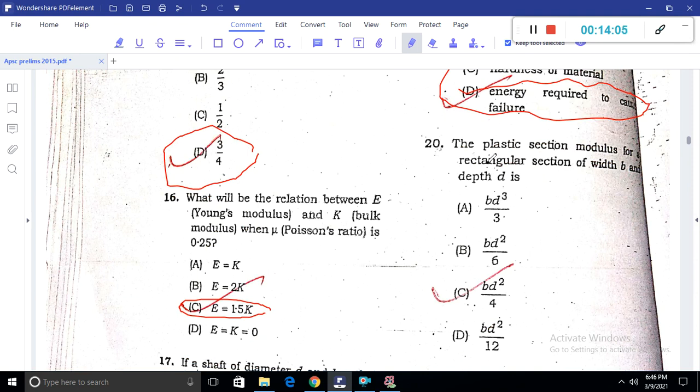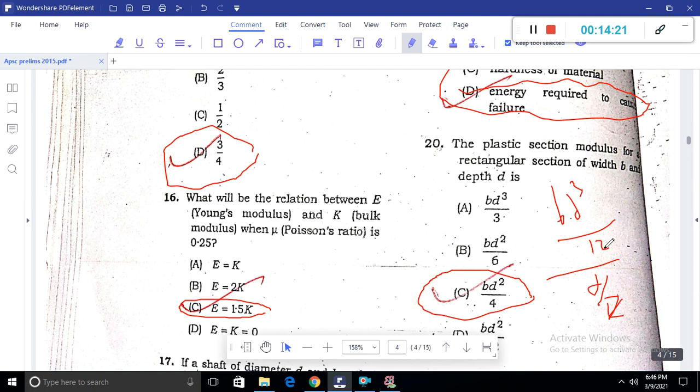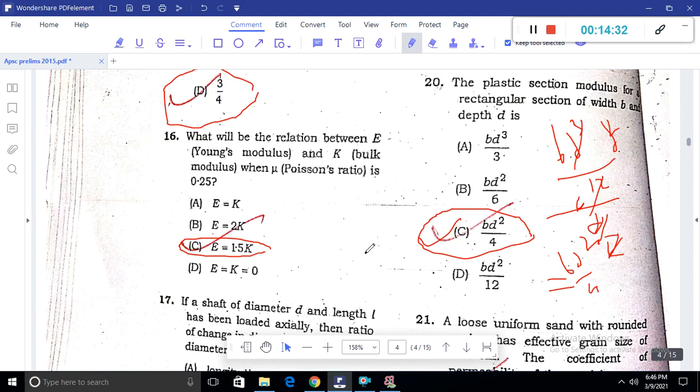Question 19: The area under stress-strain curve represents energy required to cause failure. Question 20: The plastic section modulus for rectangular section with breadth b and depth d is bd²/4. For elastic section modulus, moment of inertia bd³/12 divided by d/2 gives bd²/6.